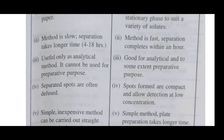The fourth point: in paper chromatography, the separated spots are often diffused. But in thin layer chromatography, the spots formed are compact and allow detection at low concentrations. So TLC is more sensitive due to compact spot formation.